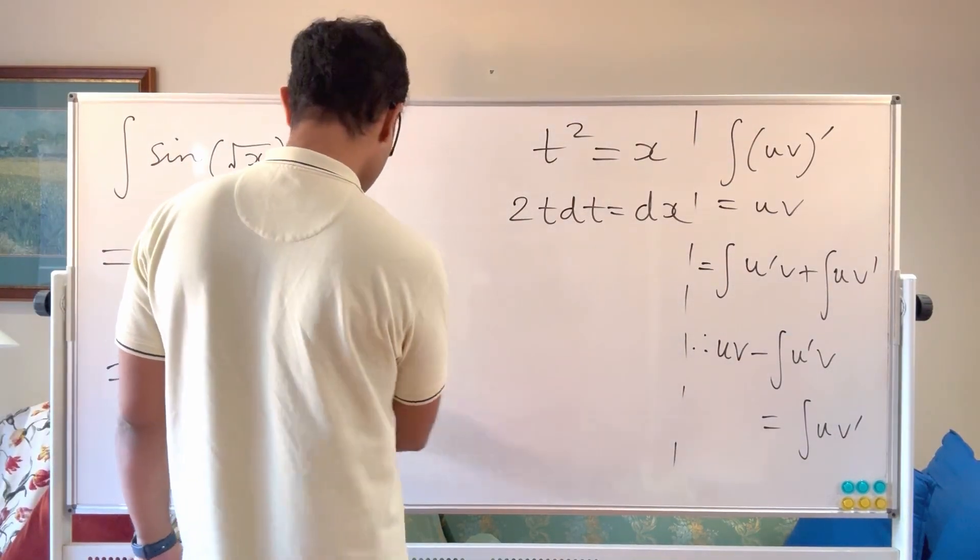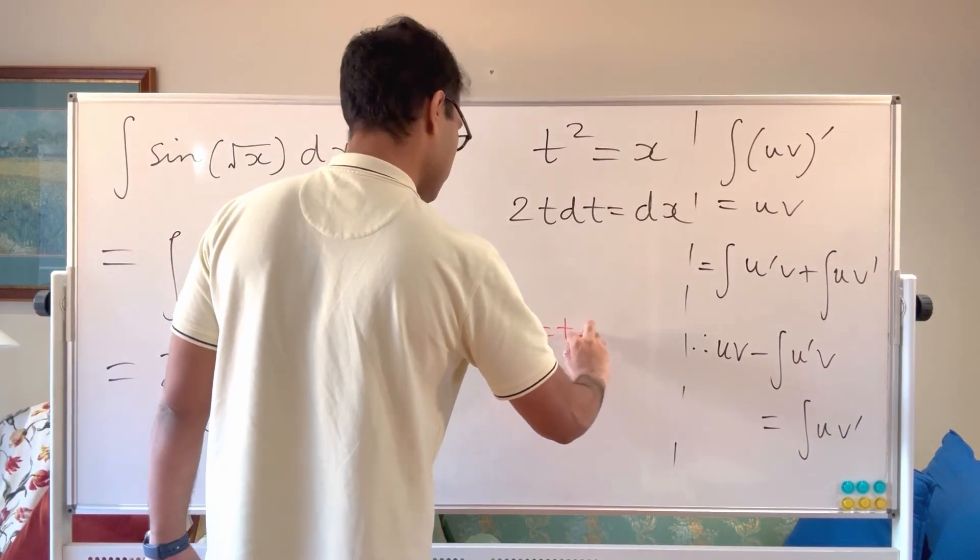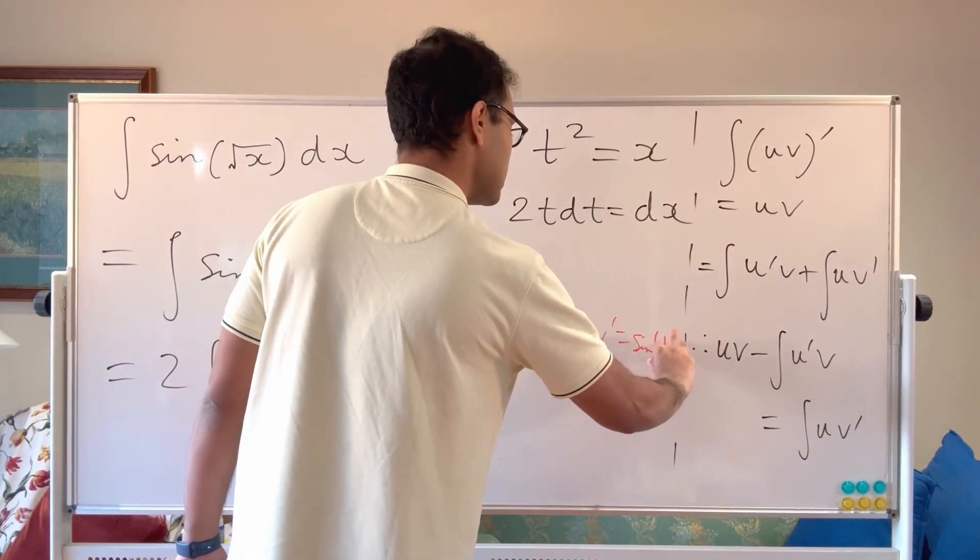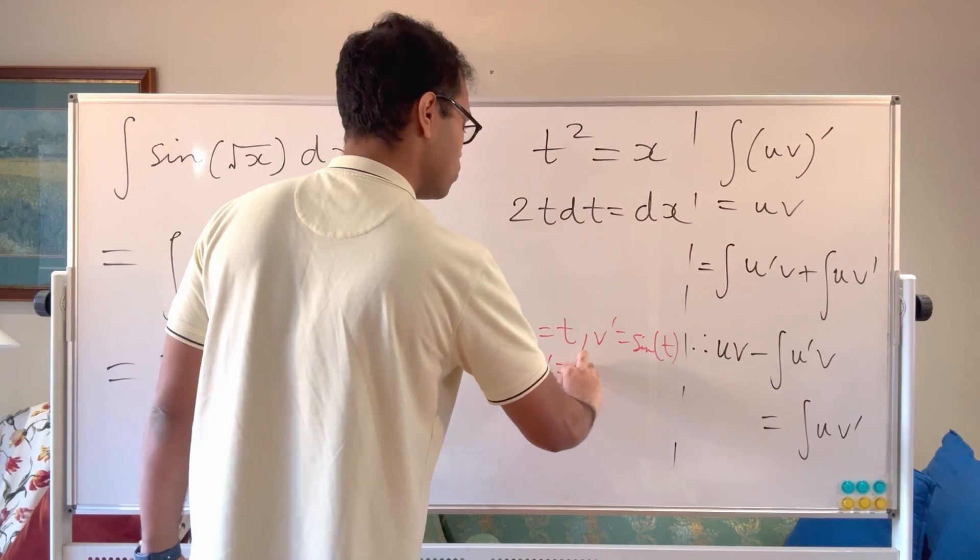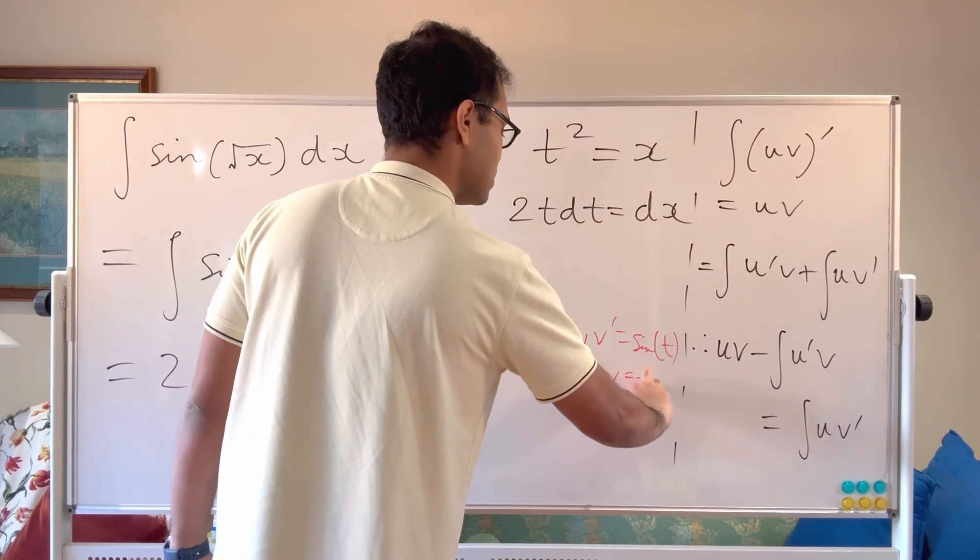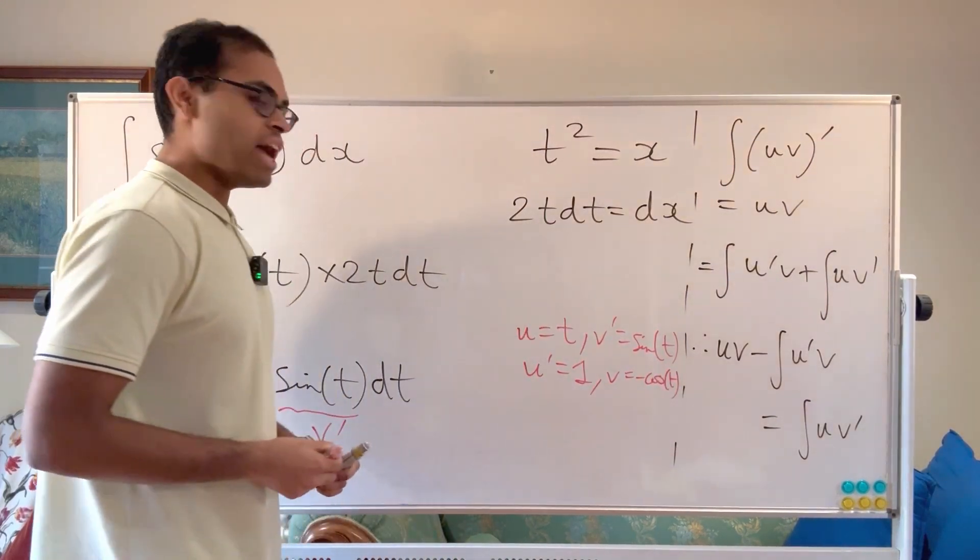So got u is equal to t, and we've got v prime is equal to sine of t. And now we can then write that u prime is equal to 1, and v is going to equal negative of cosine of t.